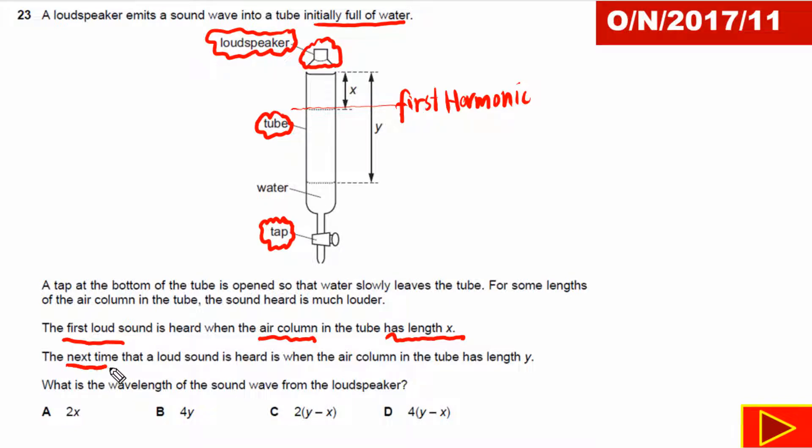And the next time, the second harmonic is heard when the length of air column is equal to y - the second time resonance takes place when length of air column is equal to y.